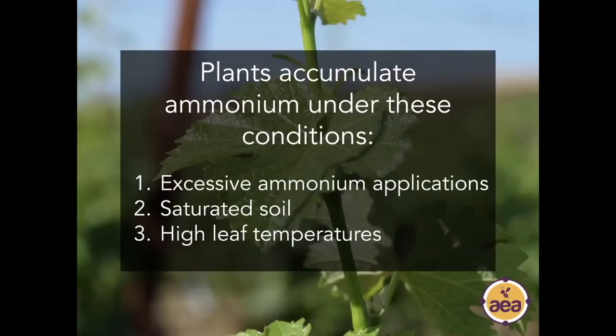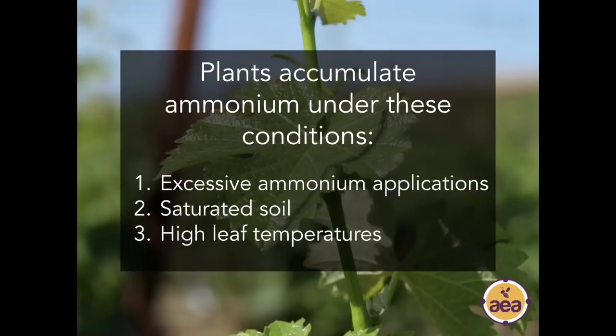When we consider ammonium within the crop, the questions we need to ask are: what causes ammonium to show up in the first place, and once it is present how can we manage and reverse it? Ammonium is coming from somewhere faster than the plants can convert it to complete proteins. The three common conditions that result in plants accumulating ammonium are: excessive nitrogen applications (not just ammonium form but also urea and even nitrates depending on soil conditions), saturated or very wet soils, and high leaf temperatures.